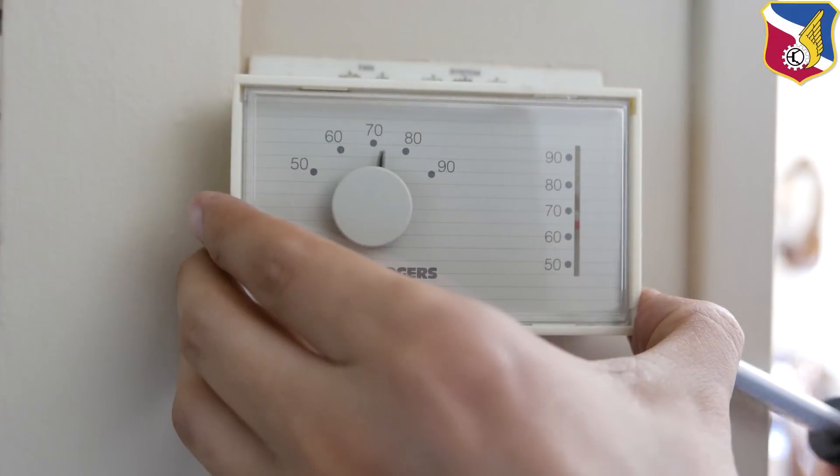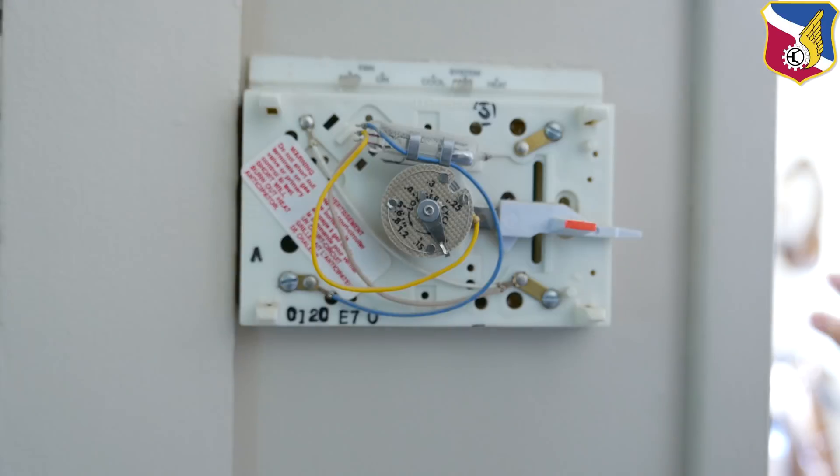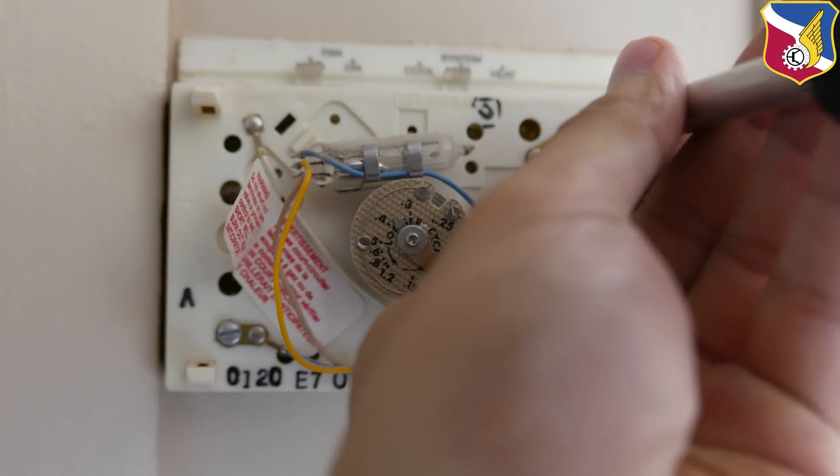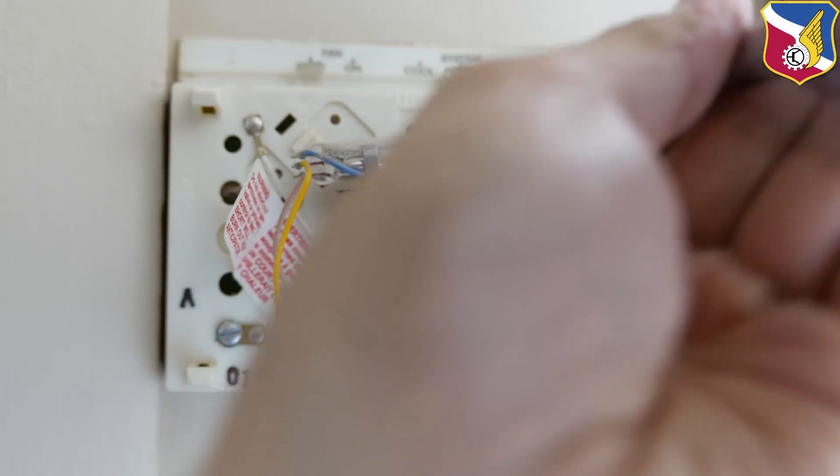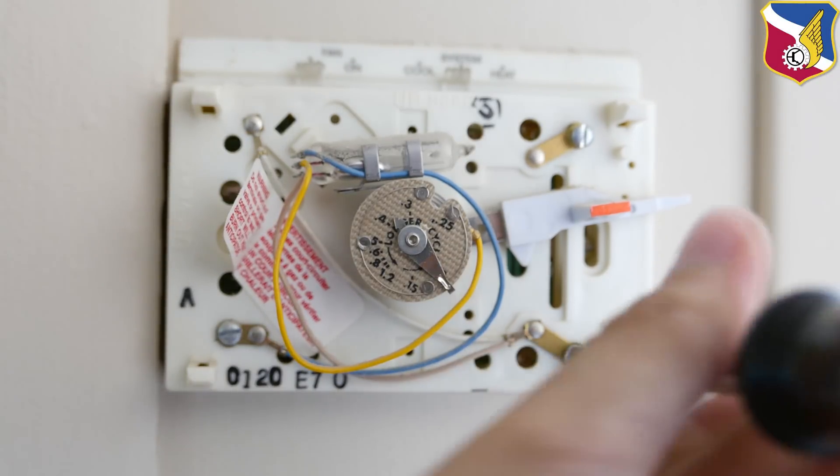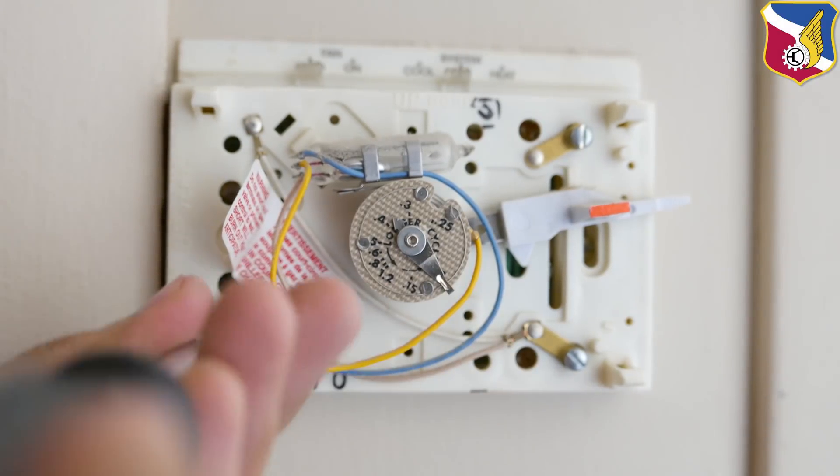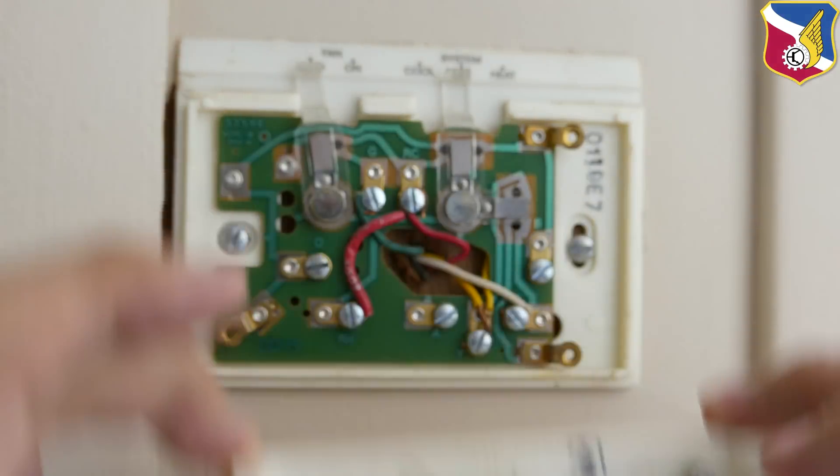So today we're going to replace an old mercury thermostat with a new digital thermostat. This original thermostat has a mercury bulb. When the thermostat calls for cold or calls for heat, the bulb would tip and complete the circuit.